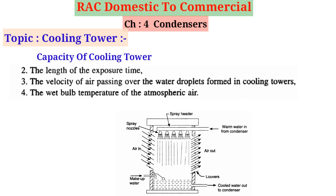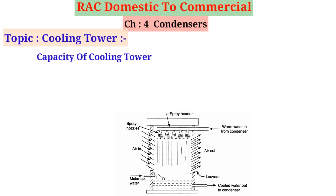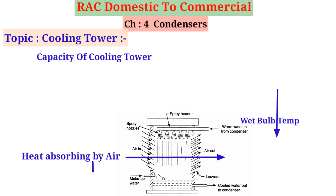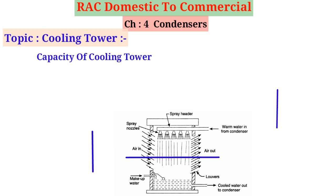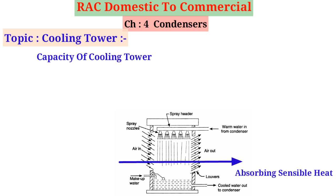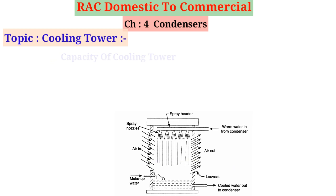4. The wet bulb temperature of the atmospheric air. It may be noted that the capacity of spray ponds increases as the wet bulb temperature of air decreases. 5. The dry bulb temperature of air has less influence on capacity because air absorbs little sensible heat from water. However, the amount of sensible heat the air can absorb increases as the dry bulb temperature difference between the water and air increases.